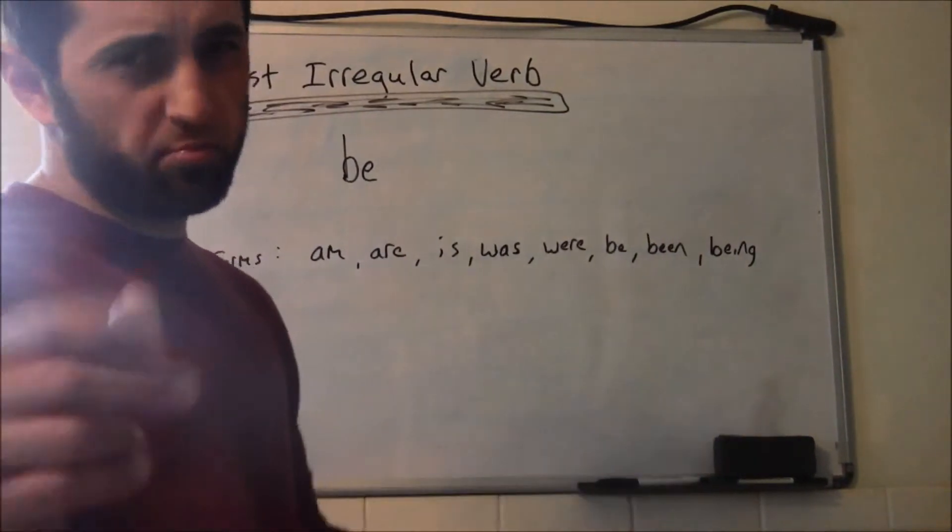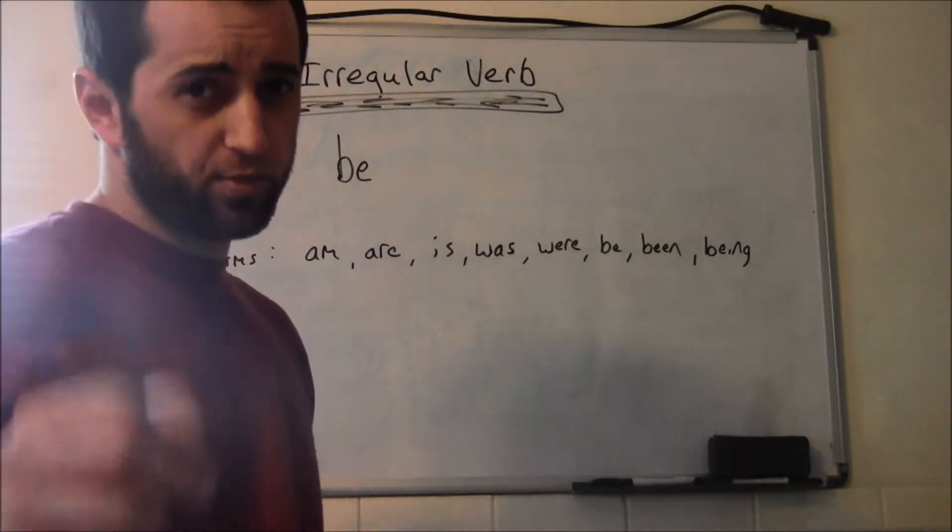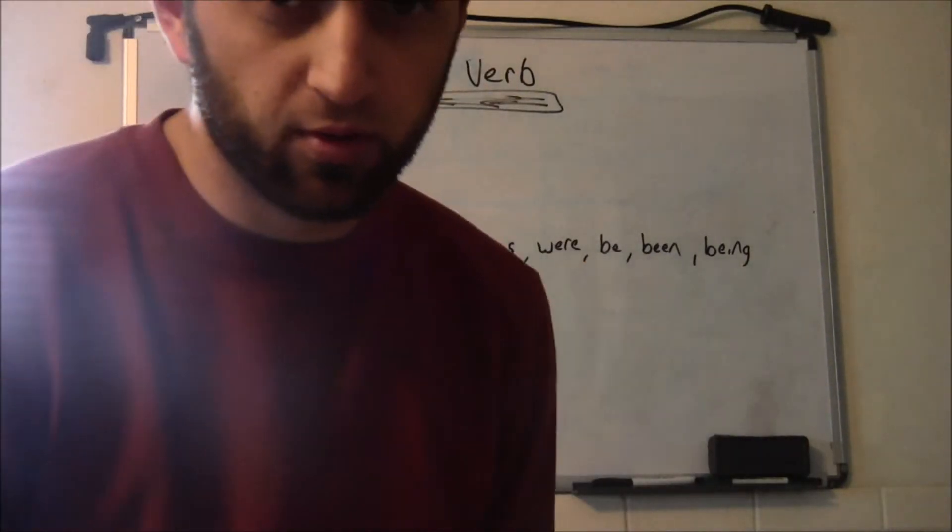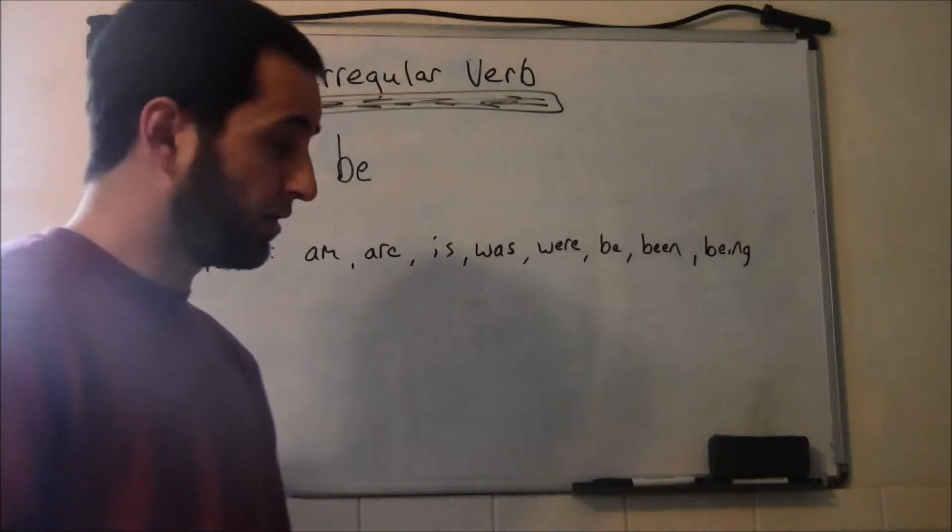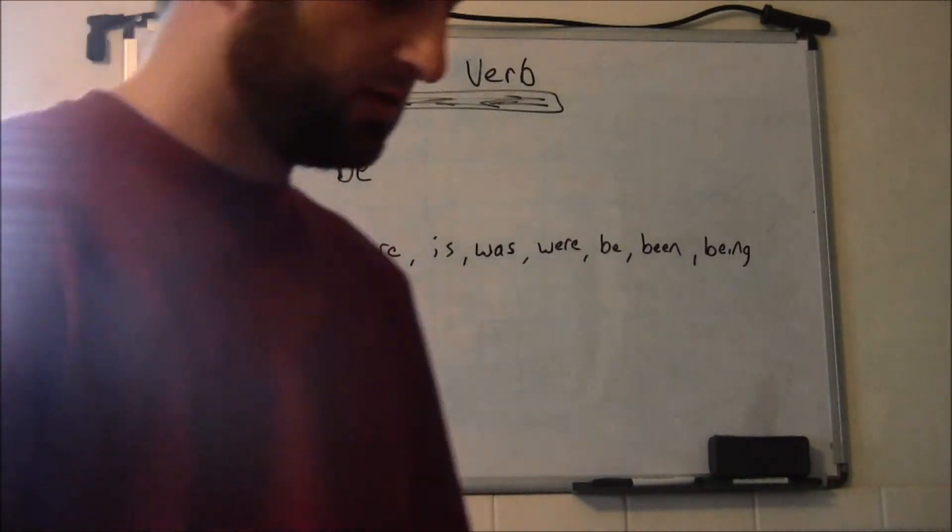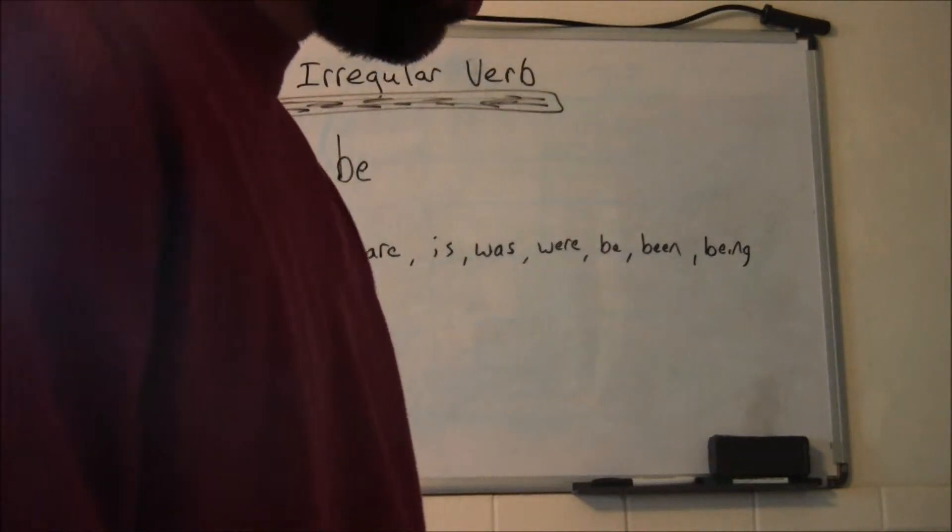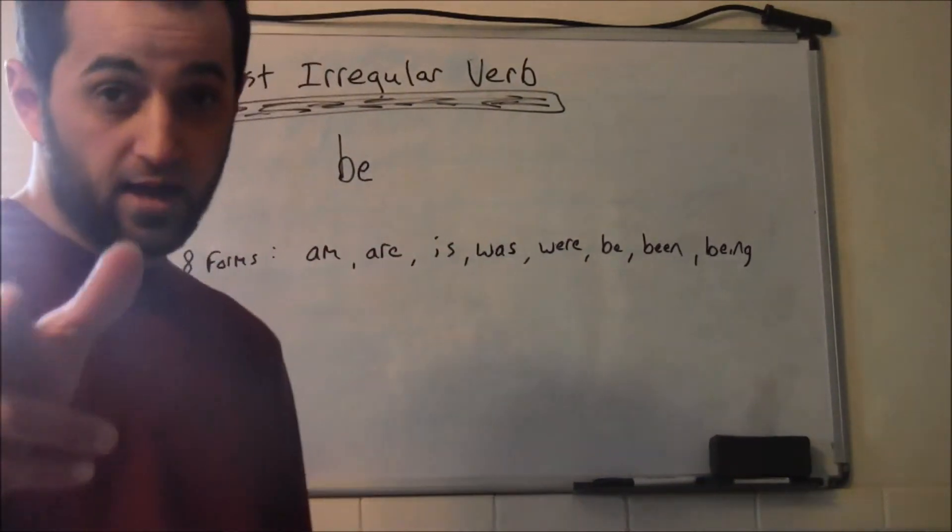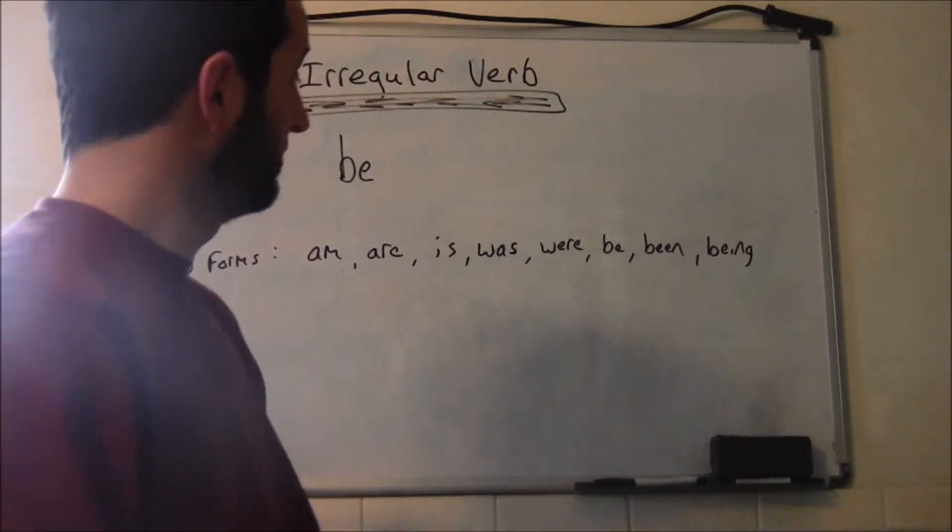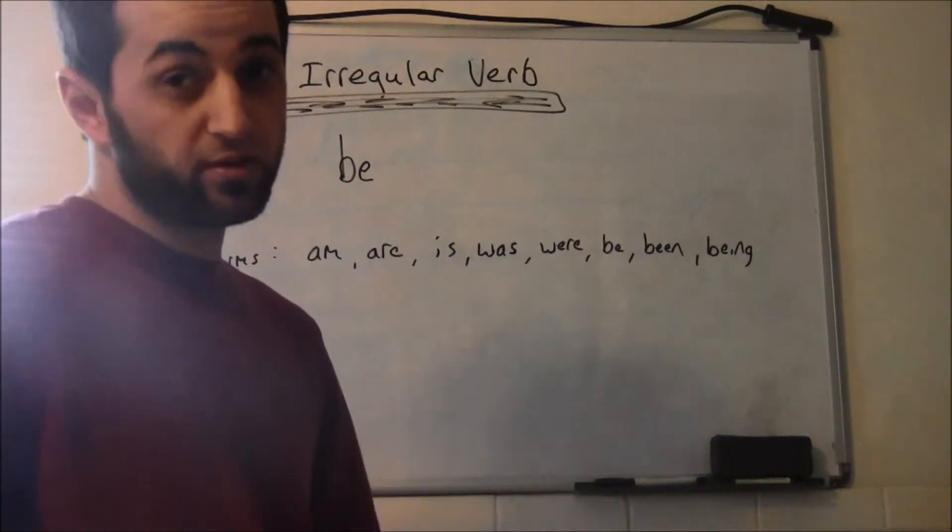Be. Be is the trickiest of them all because it is the most irregular verb. Be, we are at the movies. Be, I'm trying to think of an example. Okay, that may be true. Be, we went to the movies.